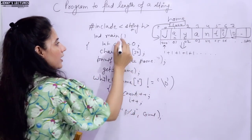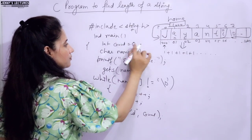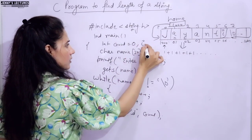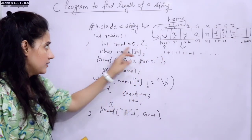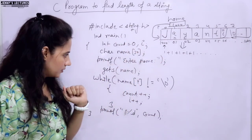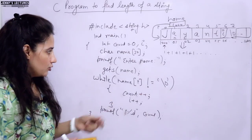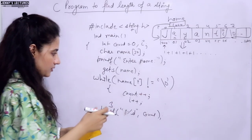Before using i in the while loop, we have to declare it. So declare int i and initialize it - int i = 0.